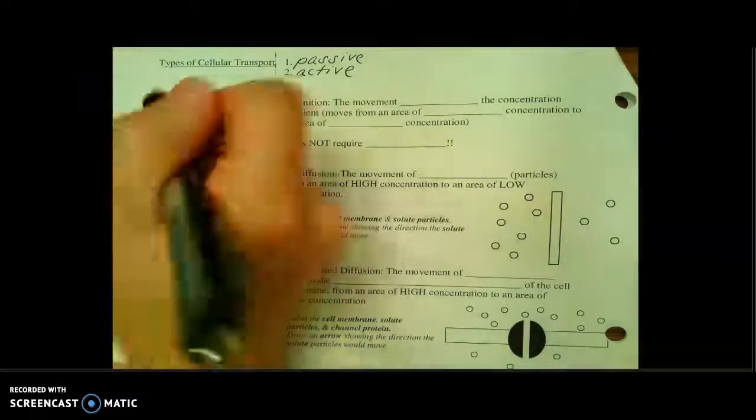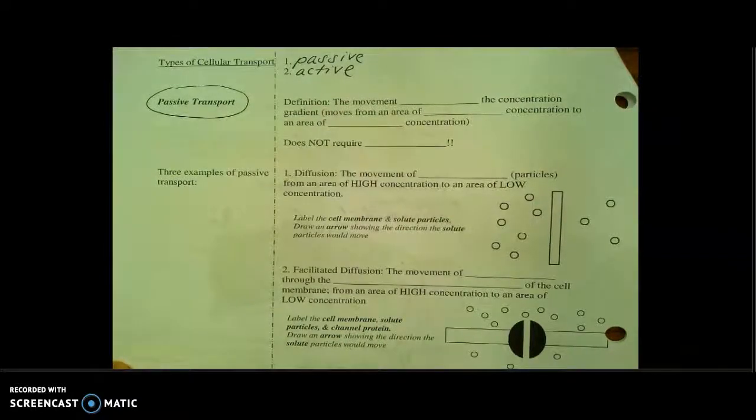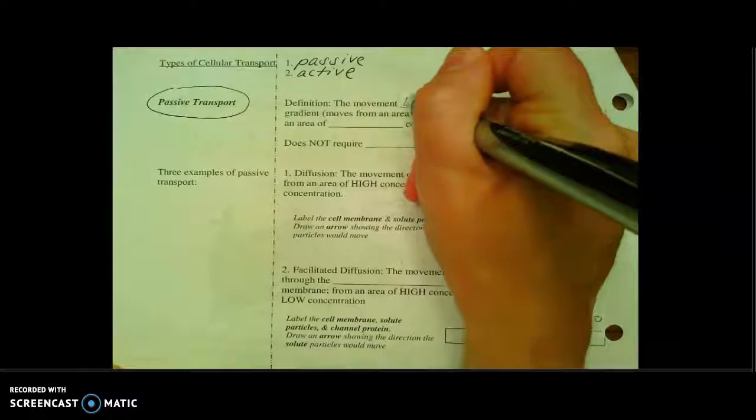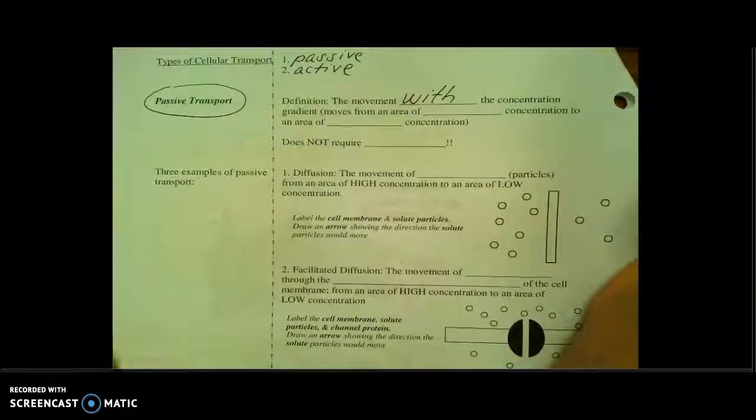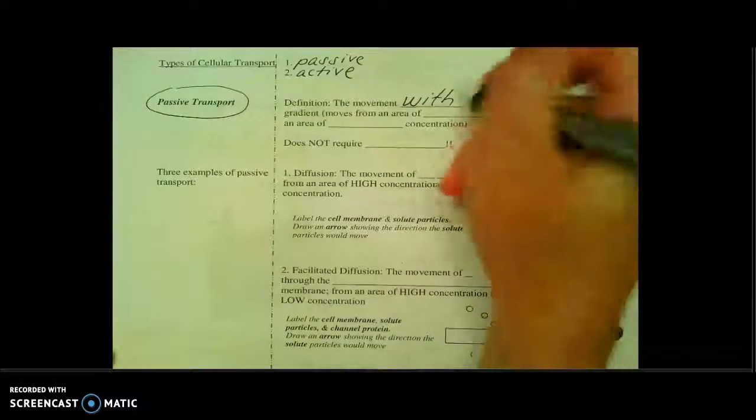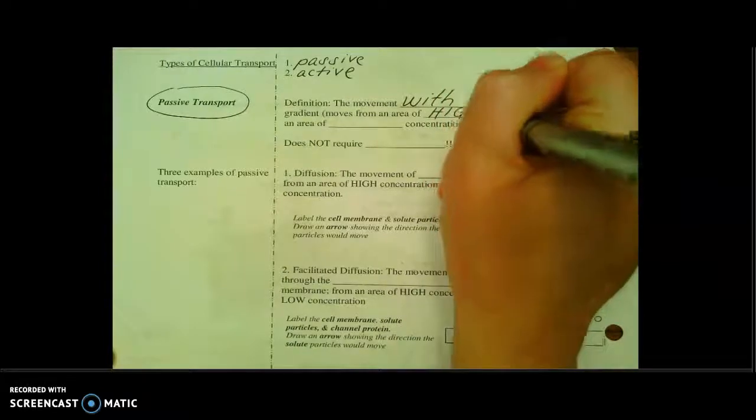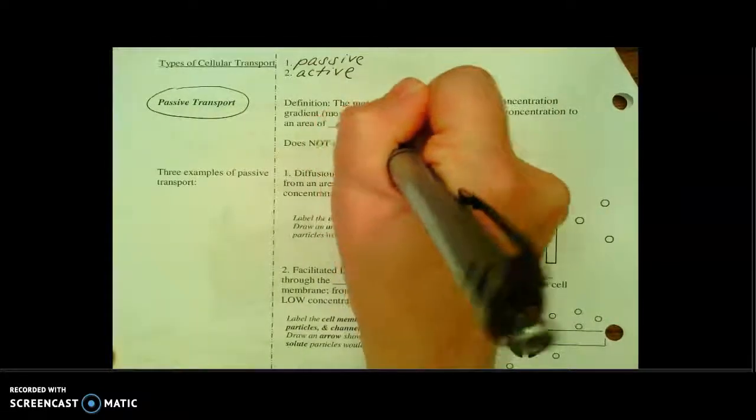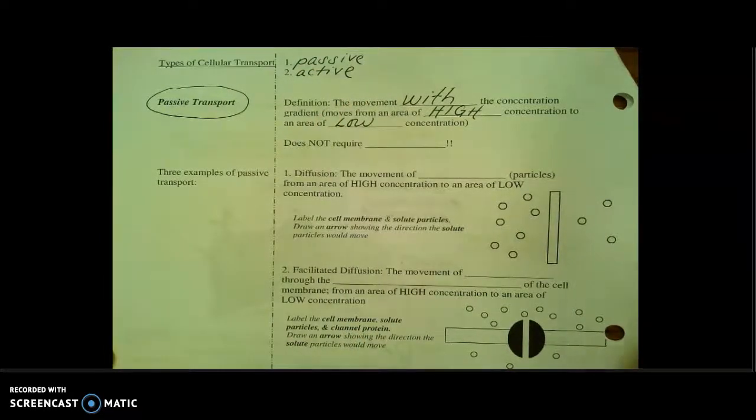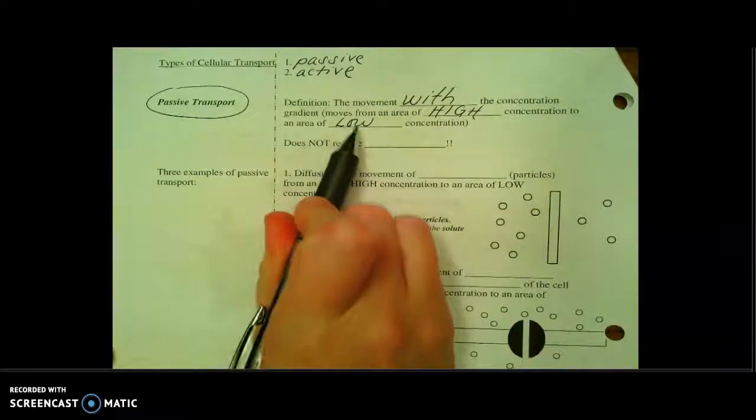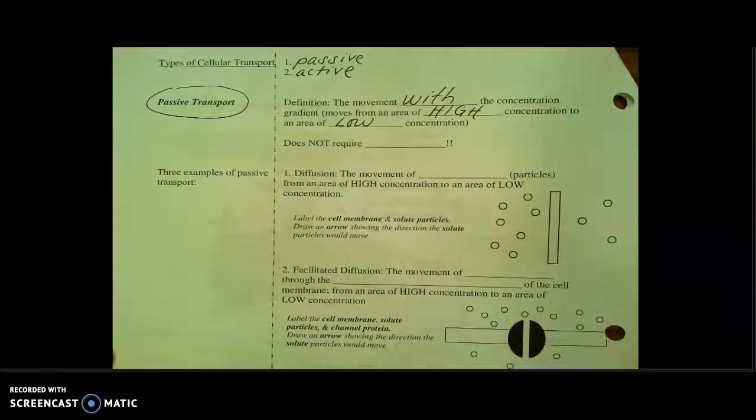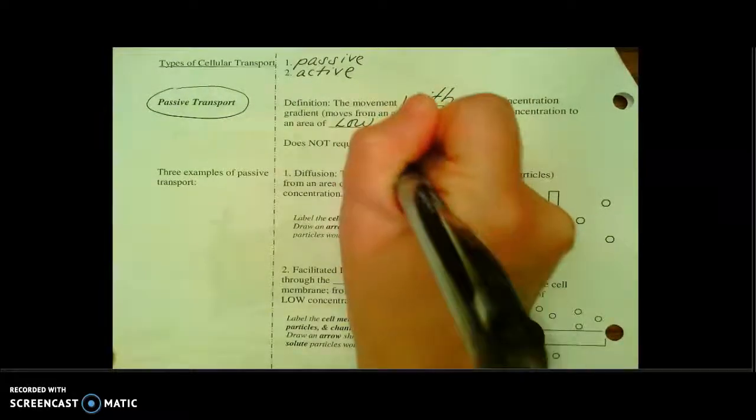So we're going to start with this broad category of passive transport. And our definition is that this is going to be movement with the concentration gradient. Meaning that substances are going to move from an area of high concentration to an area of low concentration. And this just means if you have a bunch of particles, and they're all cooped up. For example, if we put a drop of food coloring into a beaker. Those droplets start all cooped up, but their natural tendency is to flow from high to low. Now, as these things just naturally spread out, this is a passive process, meaning that it does not require energy.